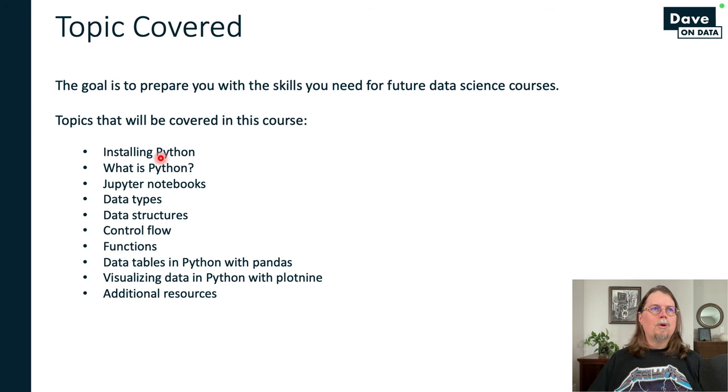So what we're going to be covering in this course is installing Python. We're going to be talking about what Python is at a high level because I'm going to assume you know nothing about programming. We're going to use Jupyter Notebooks, which is the environment we're going to use to write our code. We're going to talk about data types, data structures, control flow, functions, how to work with entire tables of data in Python using something called Pandas. We're also going to talk about how you visualize data in Python using something called Plot9, which is a data visualization library, something that's extremely commonly done in analytics and data science.